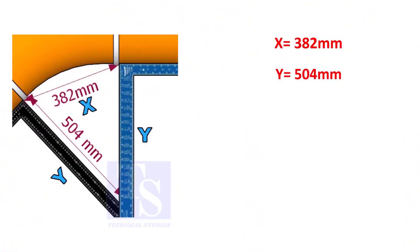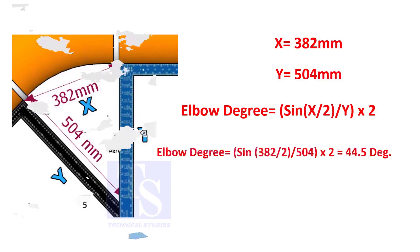Assume that the value of x is 382 and the value of y is 504. Divide the half value of 382 by 504 and convert the value to sine. Then multiply by 2.